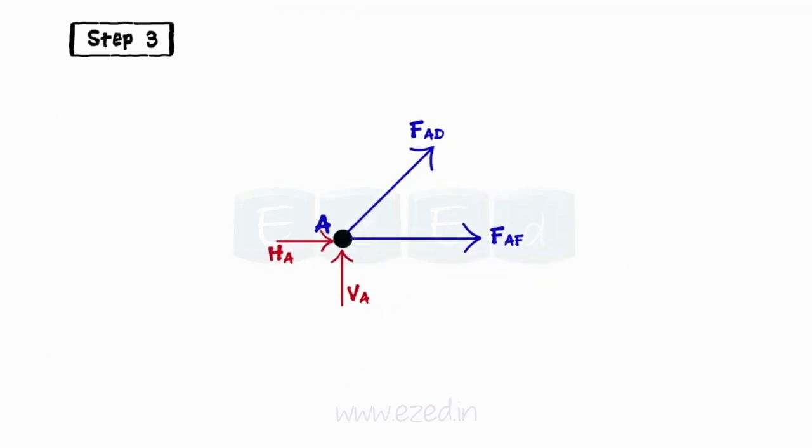Step 3: Assume that the members carry only tensile forces. Based on this assumption, show the arrows on the unknown member forces pointing away from the joint.